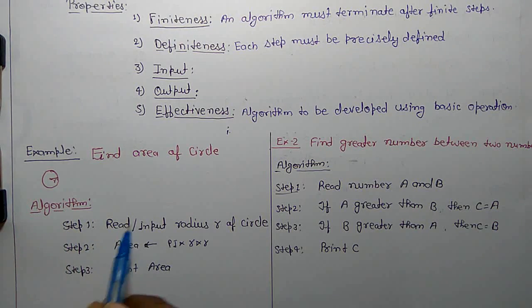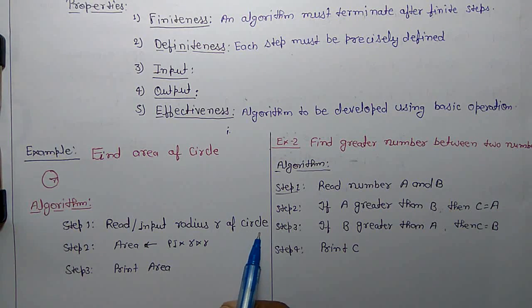Next step, calculate area using assignment operator: pi r squared. So pi, you can mention here 22 by 7 also. Step 3, print area.